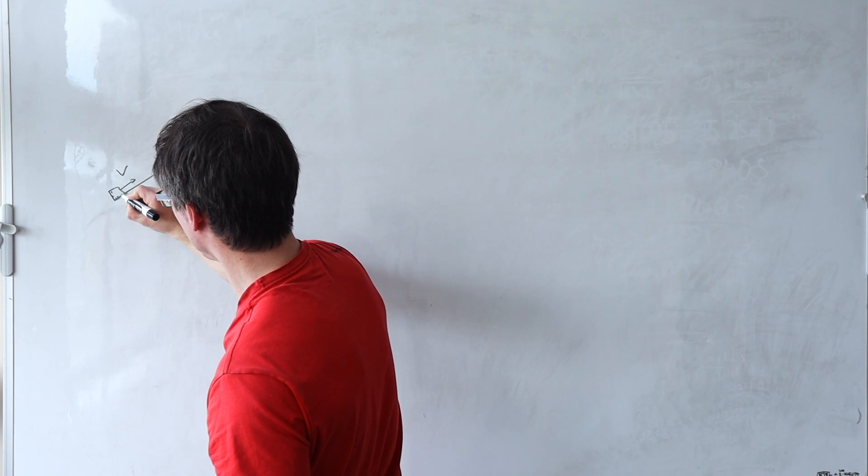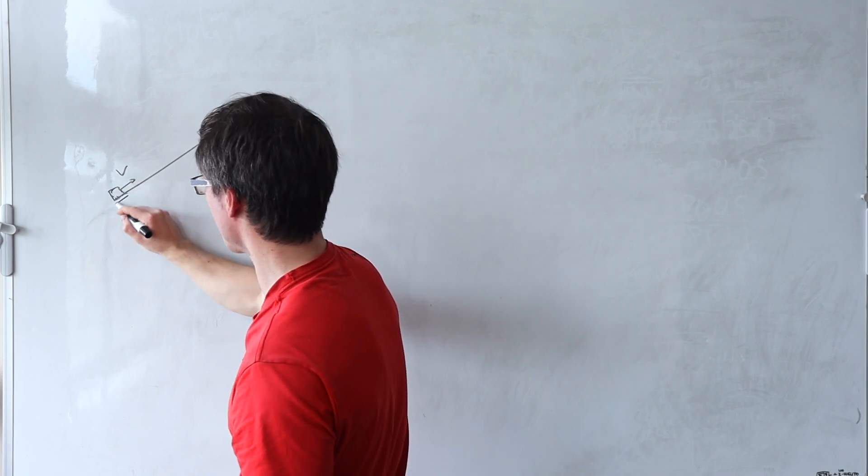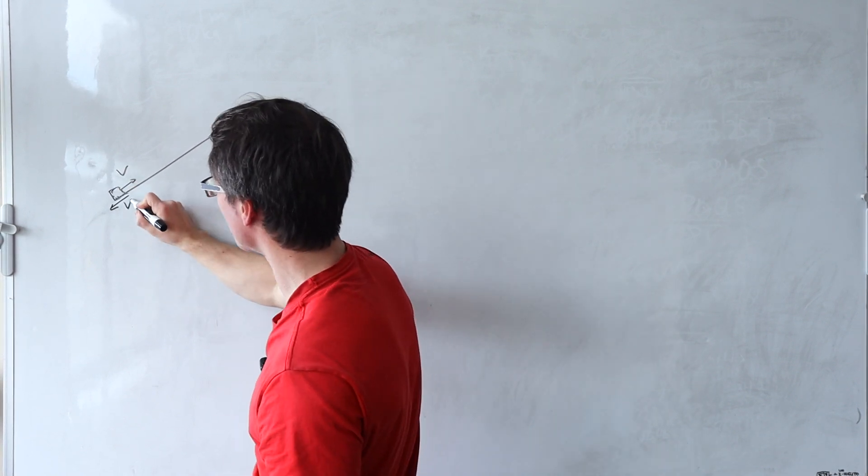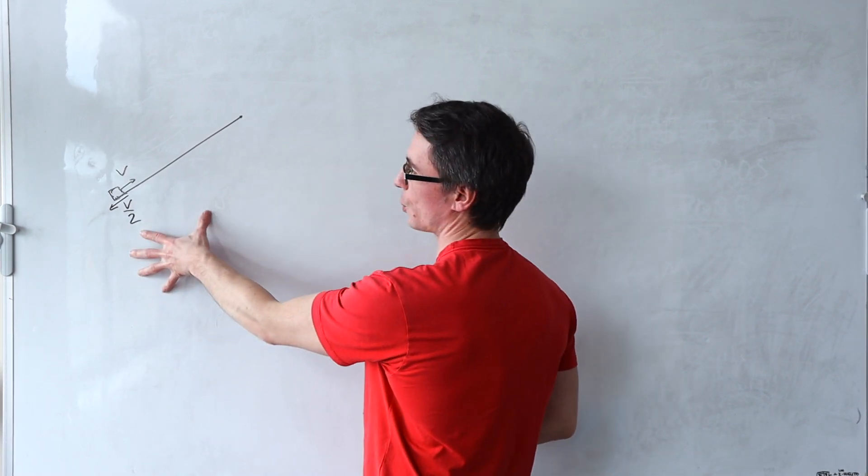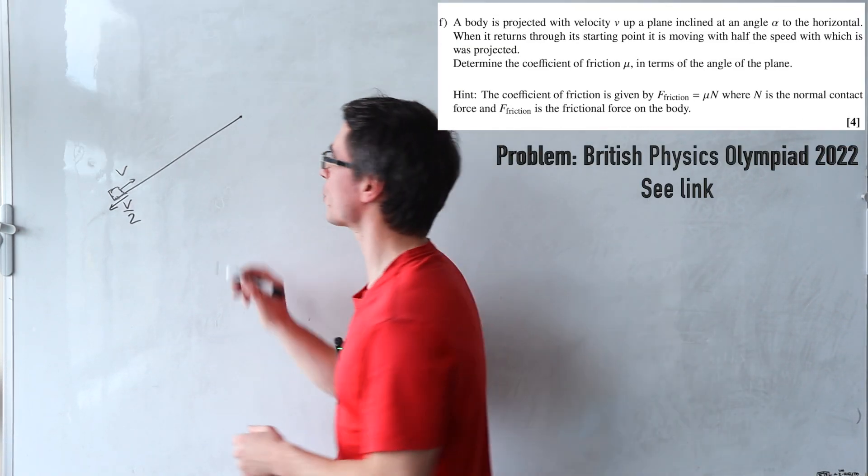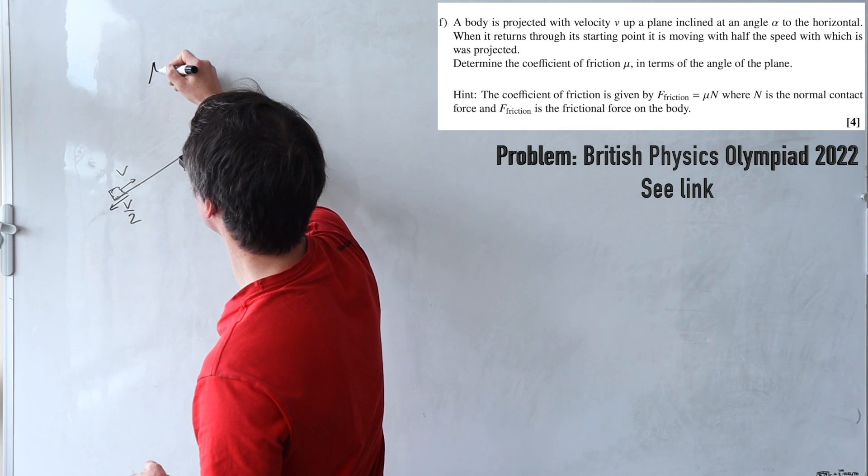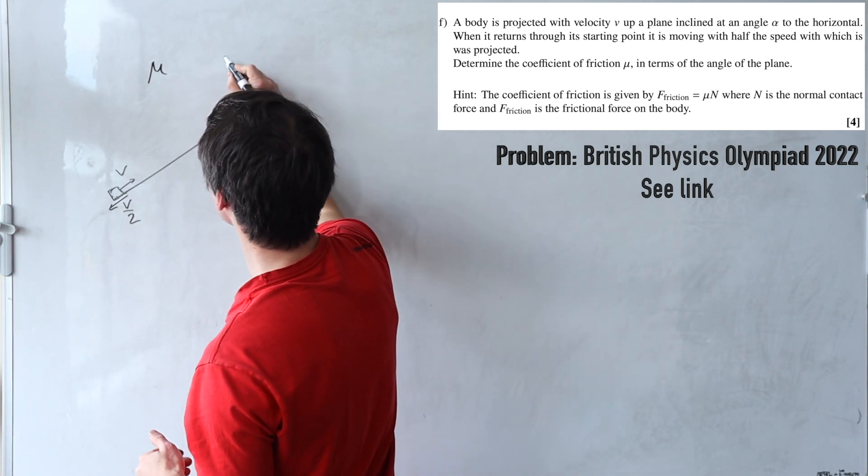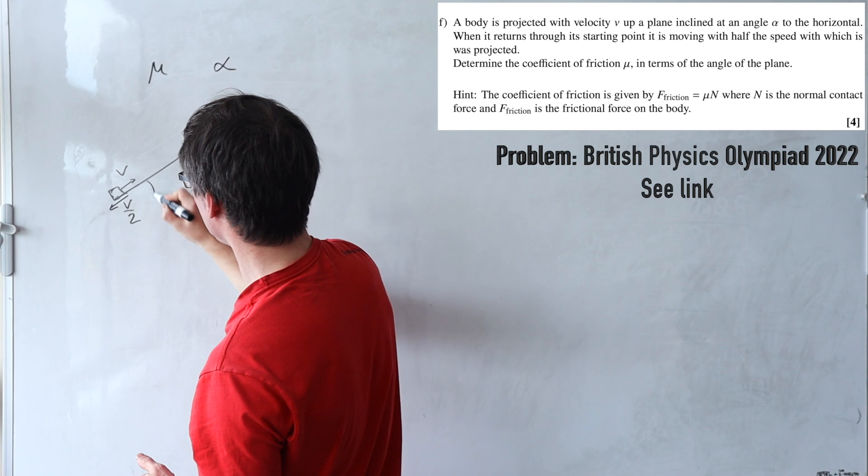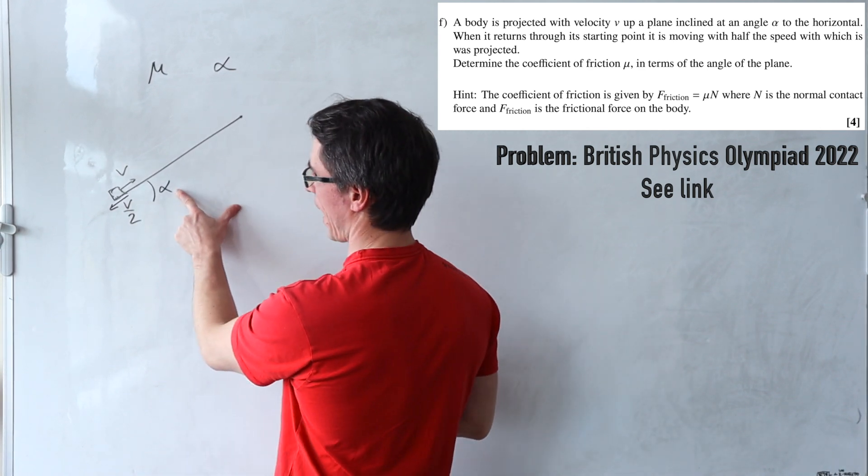But after it returns, it's going to have a speed which is half of the original velocity. What we want to do is determine the coefficient of friction in terms of the angle of the plane, let's call this one alpha.